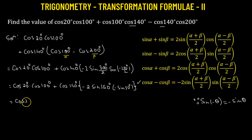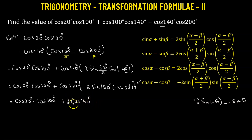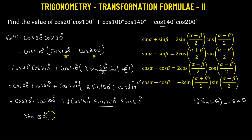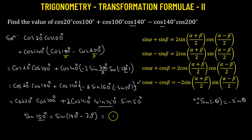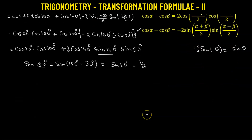This becomes cosine 20° times cosine 100°. The two negatives make a positive, so we get positive cosine 140° times 2 times sine 150° times sine 50°. Now sine 150° can be expressed as sine(180° − 30°), which transforms to positive sine 30°, and sine 30° equals one half.